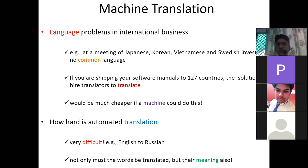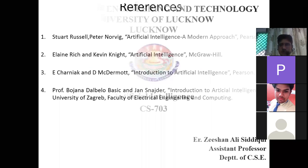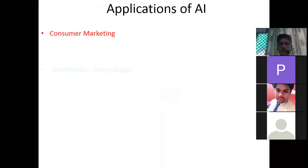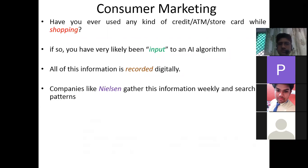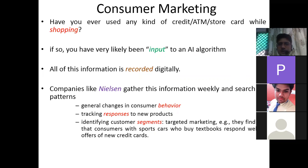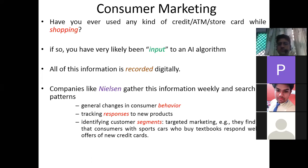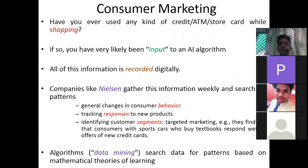These are some application areas of artificial intelligence. In the beginning it is very theoretical, so it can be quite boring — but we need to understand why we are learning AI and where we are applying it. To recap: consumer marketing uses your data as input to AI algorithms because all information is recorded digitally. Companies track consumer behavior, responses to new products, and identify customer segments for targeted marketing.